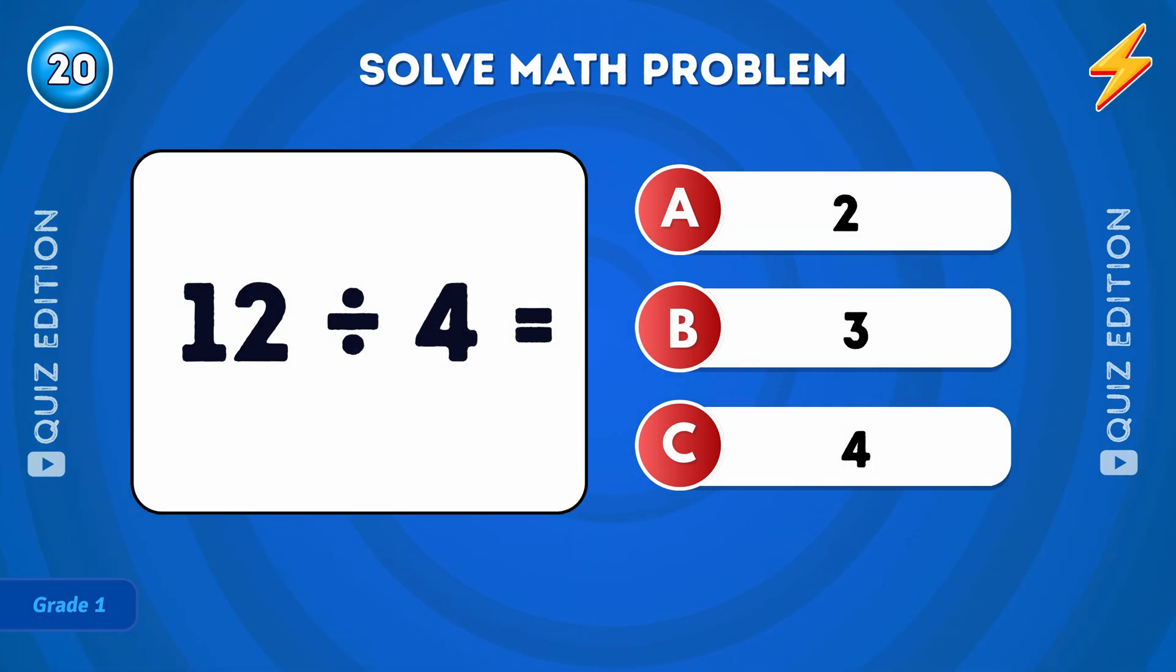Last one. What is 12 divided by 4? The answer is 3.